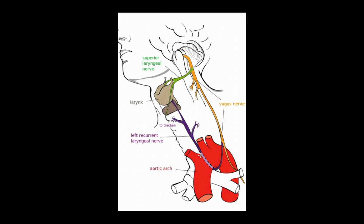Sometimes the inferior laryngeal artery can also arise directly from the thoracic trunk and follows alongside the recurrent laryngeal nerve. Venous drainage is by the superior and inferior laryngeal veins. The superior laryngeal vein drains into the internal jugular vein via the superior thyroid vein, whereas the inferior laryngeal vein drains to the left brachiocephalic vein via the inferior thyroid vein.